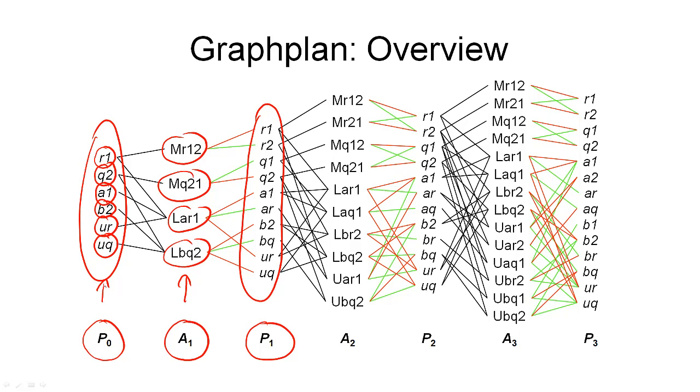When we look at the detail of the algorithm, we will see that there are actually a few more action nodes in the action layer representing no ops, no operations, which were introduced to carry propositions forward from one proposition layer to the next. And there are also some additional edges not shown in this graph. And these are edges that are internal to proposition and action layers and represent mutual exclusivity of these symbols being true.